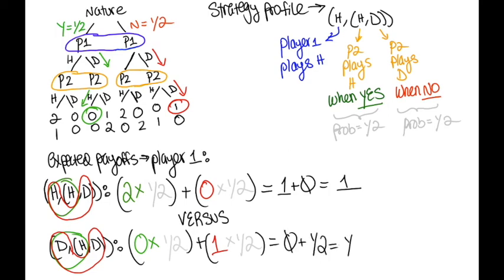Therefore, the expected payoff is 1 half. We see the strategy profile of HHD has a higher expected payoff than DHD, and so HHD is our Bayesian Nash equilibrium.